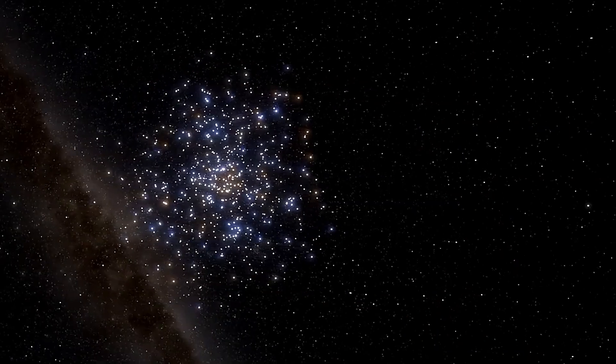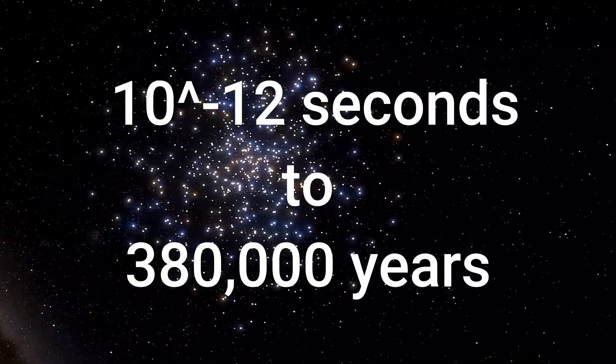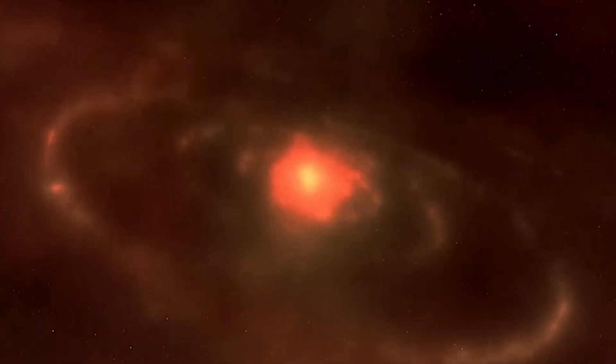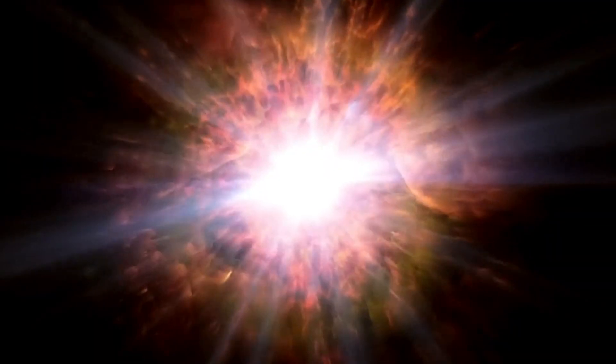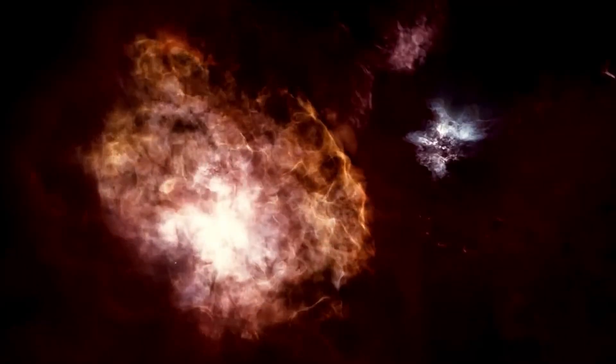Entering the particle era, from 10 to the minus 12 seconds to 380,000 years after the Big Bang, radiation and subatomic particles like electrons and protons dominated the cosmos, eventually leading to the formation of atoms. This era marked a significant transition as the universe cooled enough for atomic structures to form, which would later clump together under the influence of gravity to create stars and galaxies.